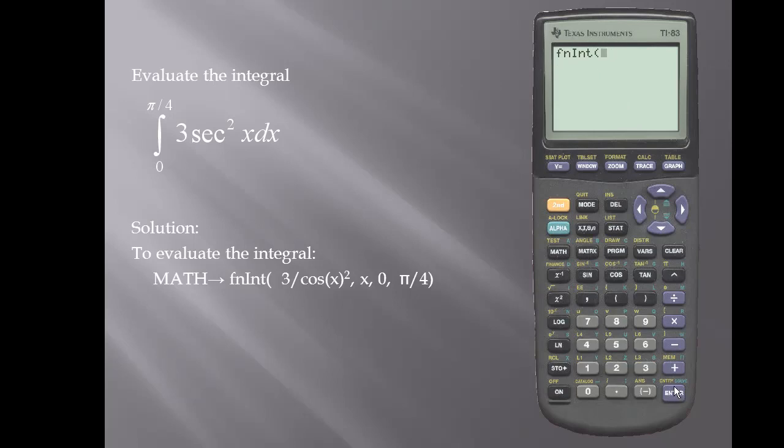If you remember from your rules from trigonometry, secant squared is equal to 1 over the cosine squared. So for my expression I'll enter 3 divided by the cosine.